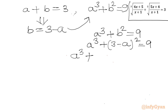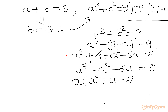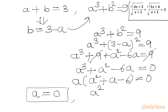Expanding: a³ + 9 - 6a + a² = 9. The 9s cancel, leaving a³ + a² - 6a = 0. Factoring out a: a(a² + a - 6) = 0. So a = 0, or a² + a - 6 = 0.